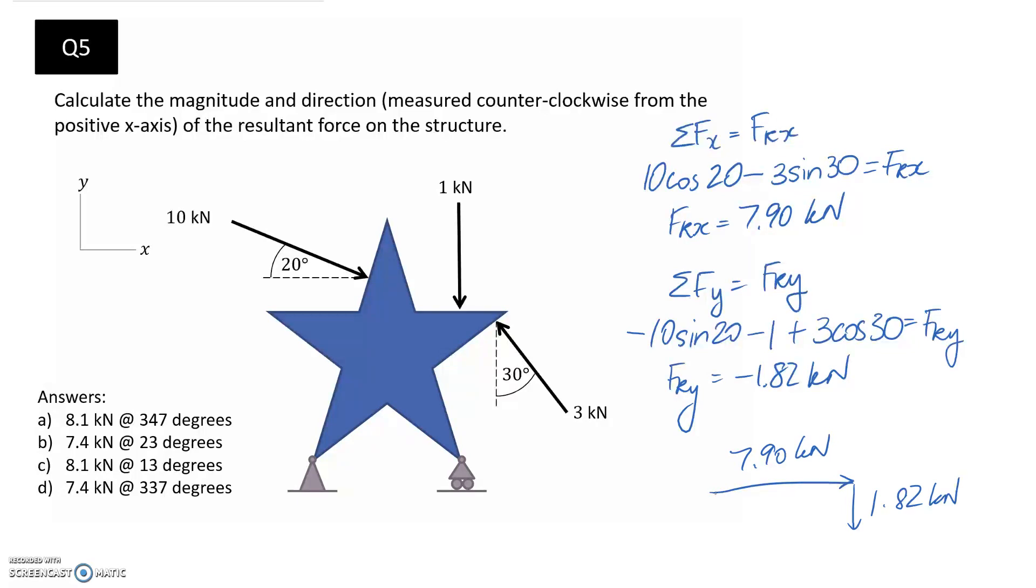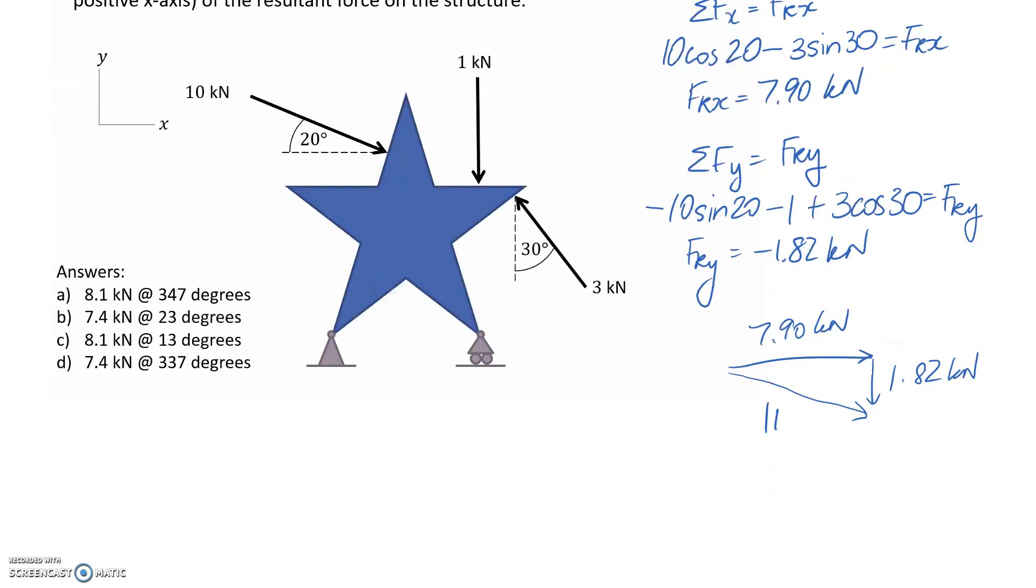So the resultant is the last side of the triangle, the hypotenuse here. So I'm going to label it as Fr, with these little bars around it, to say that it's the magnitude. And in a moment we're also going to try and find the angle, but we'll get to that in a second.